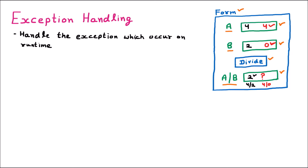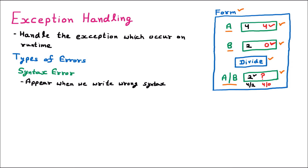We should understand the different types of errors. The first type is a syntax error. This appears when we write the wrong syntax. For example, in VB.NET we declare an integer variable as 'Dim a As Integer'. If somebody mistakenly adds a semicolon afterwards, that is a syntax error because you are not following the required syntax of the language.